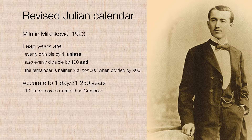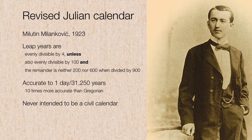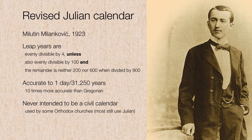However, this calendar was never intended to be a civil calendar. Milankovic was Orthodox, and this was a calendar he devised for the Orthodox Church. Most Orthodox churches still rely on the old Julian calendar — they're not even on the Gregorian calendar. But a couple of Orthodox churches do make use of Milankovic's revised Julian calendar.